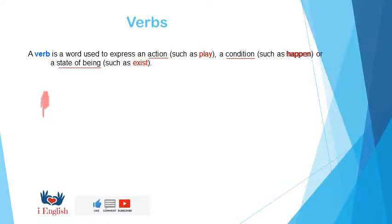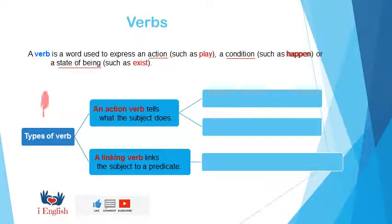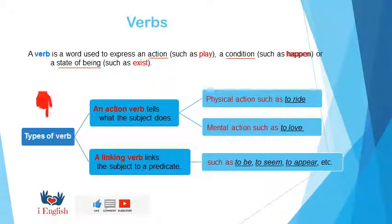And now let's see the types of verbs. An action verb tells what the subject does. A linking verb links the subject to a predicate. Wait, an action verb is divided into a physical action such as to write and a mental action such as to love. But a linking verb such as to be, to see, to appear, etc.